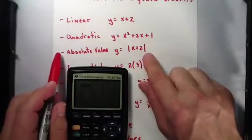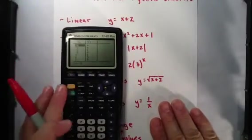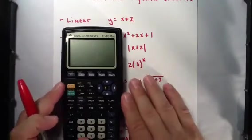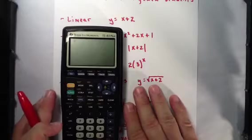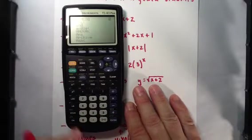Another function that we studied this year. Absolute value. This is a tricky one with our calculator. So we're going to go back to the homepage here. Hit second. Move it up a little. Second, zero for the catalog.